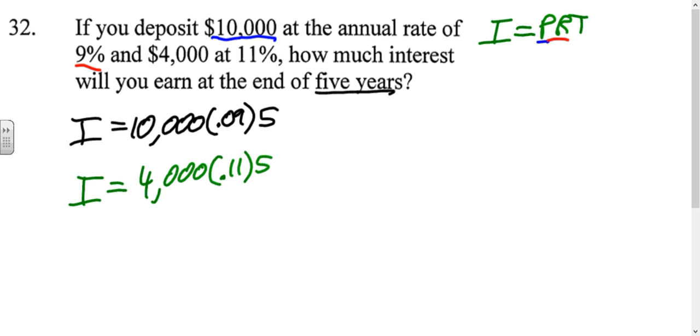So when we multiply those out, we get 10,000 times 0.09 times 5 is 4,500. And 4,000 times 0.11 times 5 is 2,200. So those are the two amounts of interest that we earned. But it wants to know the total, so we'll add those together. The total interest earned in that five years is $6,700.